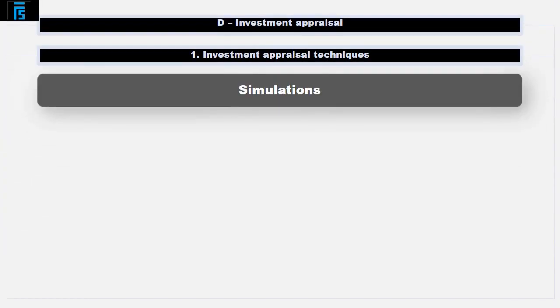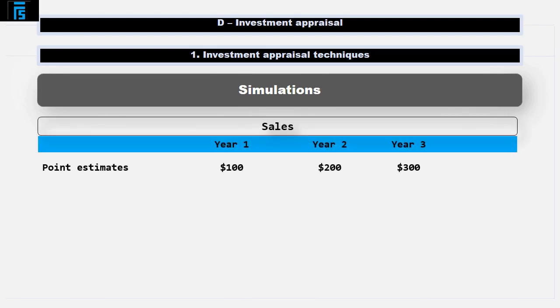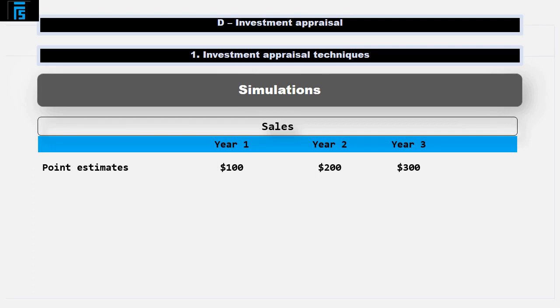Lastly in this video, let's consider simulations. When we put NPV calculations together, we put our best estimates for what we think the cash flows will be into that calculation. For example, for sales. These estimates are what is known as point estimates. They are a number being used to represent a range of possible values.